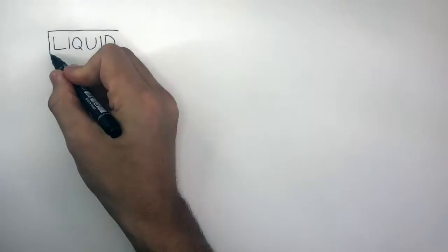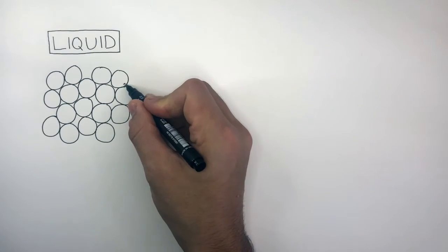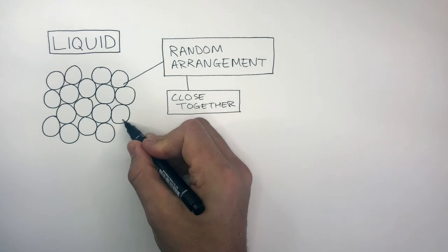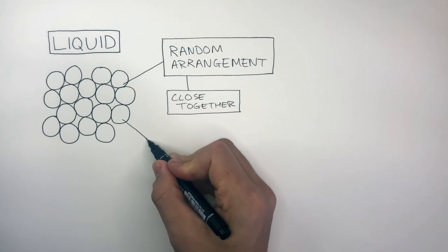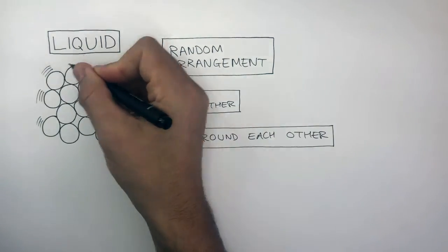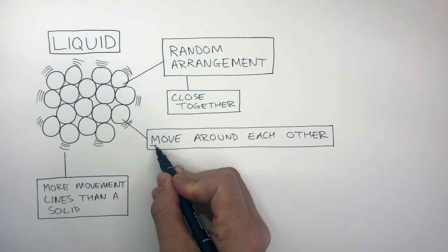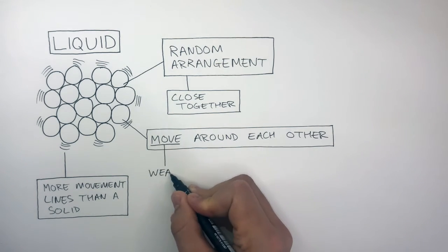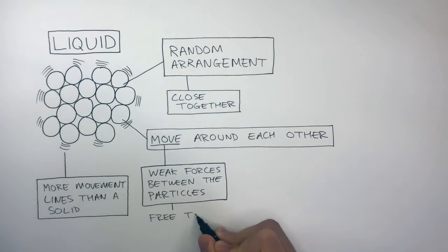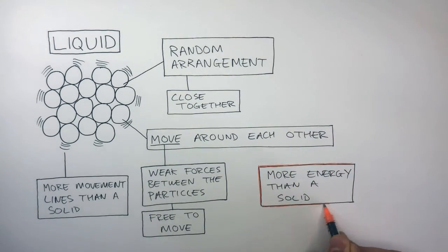In liquid particle diagrams, the particles are drawn in random places and they are close together. This is because the particles in liquids have a random arrangement and are close together. The particles are able to freely move around each other, as shown by the movement lines. There are more movement lines in a liquid than a solid. The particles are able to move because there are weak forces between the particles, allowing them to be free to move.